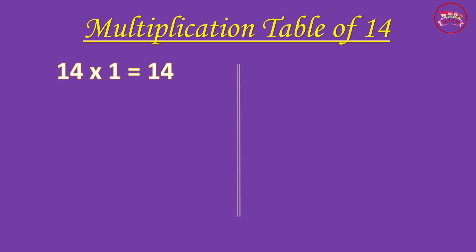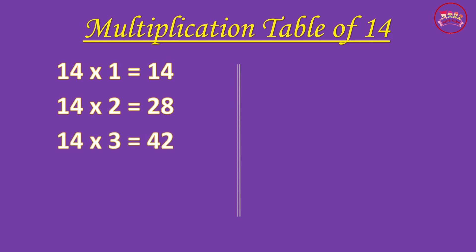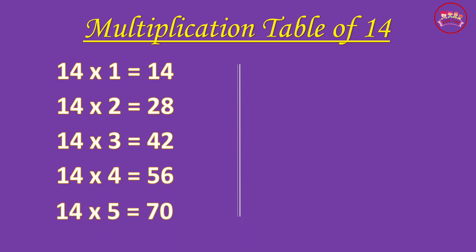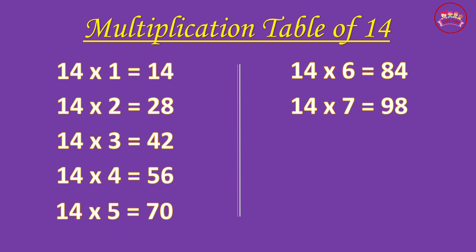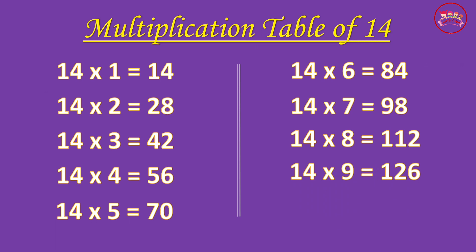Multiplication Table of 14. 14-1 is 14, 14-2 is 28, 14-3 is 42, 14-4 is 56, 14-5 is 70, 14-6 is 84, 14-7 is 98, 14-8 is 112, 14-9 is 126, 14-10 is 140.